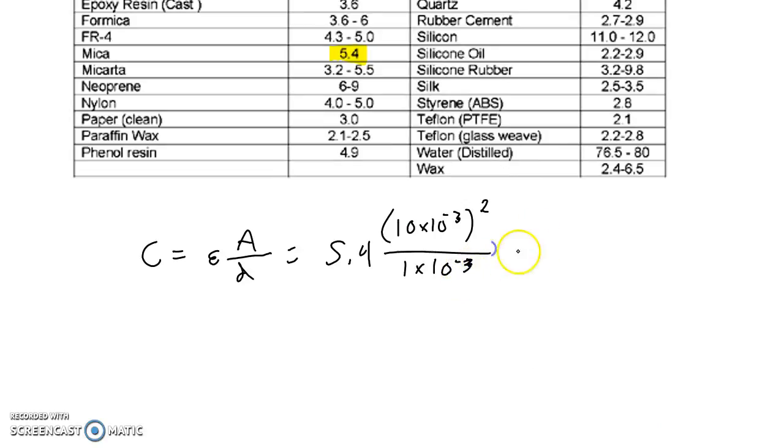You work that out, and you should get 5.4 times 10 to the negative 1. And the units for capacitance are farads, F, capital F. So we know the properties of this capacitor that we're talking about now.